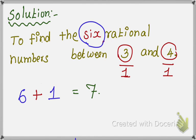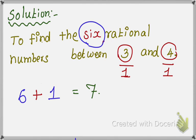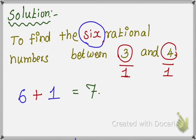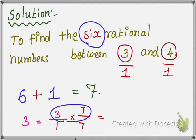Now multiply the first number. The first number is 3, so multiply 3 by 7. That is, 3 can be written as 3 by 1, then multiply 7 in the numerator and denominator. Now 3 times 7 gives 21, divided by 1 times 7 gives 7. So 3 equals 21 by 7.